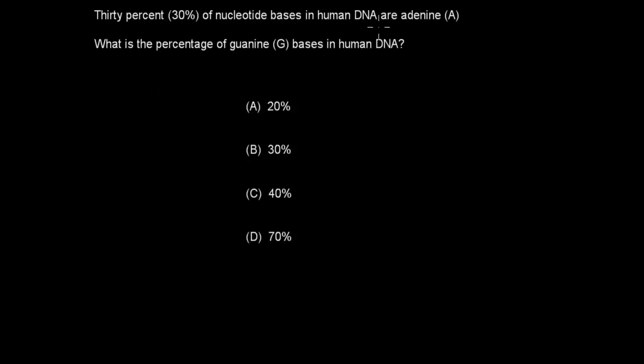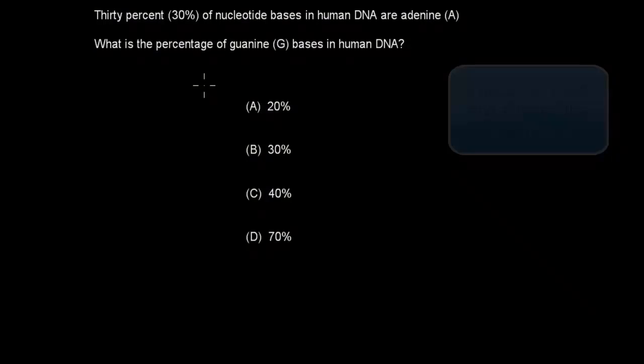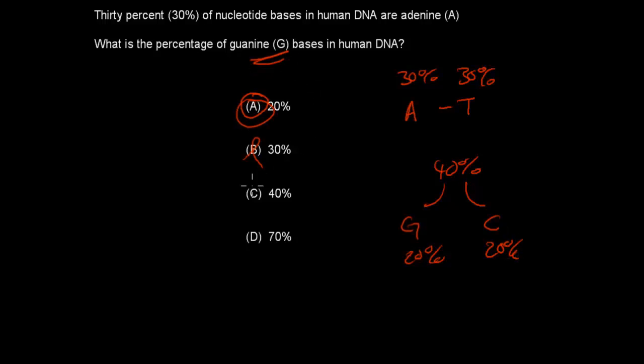30% of nucleotide bases in human DNA are adenine. What is the percentage of guanine bases in human DNA? A. 20%. B. 30%. C. 40%. Or D. 70%. Are you ready? Pause the video and attempt the question. Welcome back. The correct answer is 20%. And we know that because it says adenine is 30%, that means that thiamine also has to be 30%. So that leaves with a total of 40% being left over. And that has to be split between G and C. So therefore we know that both G has to be 20% and C has to be 20%. So guanine has 20% of it. A is correct and the other ones are all false.